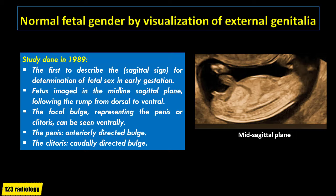A study done in 1989 was the first to describe the sagittal sign for determination of fetal sex in early gestation. With the fetus being scanned in the midline sagittal plane, following the rump from dorsal to ventral, the focal bulge representing the penis or clitoris can be seen ventrally. The penis appears as an anteriorly directed bulge, while the clitoris appears as a caudally directed bulge.